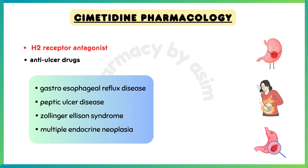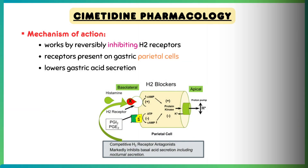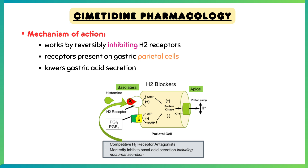Talking about the mechanism of action of cimetidine: this medication works by reversibly inhibiting H2 receptors on gastric parietal cells, which lowers gastric acid secretion.